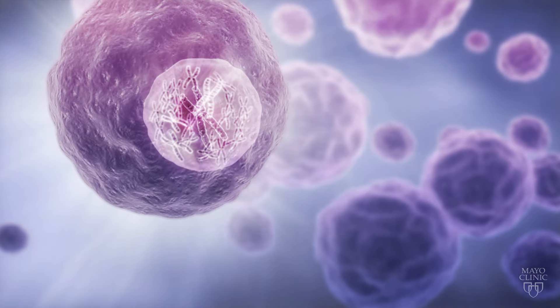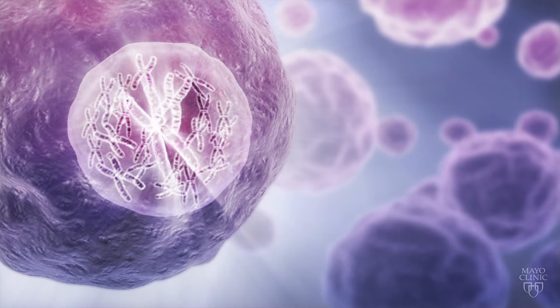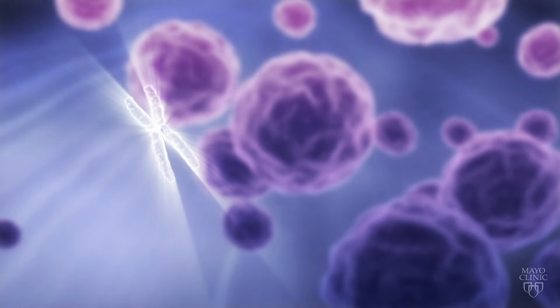Within every normal cell are 23 pairs of chromosomes. Chromosomes are structures that house DNA.